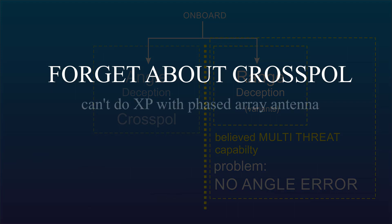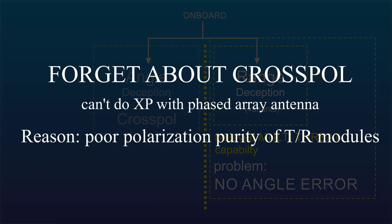And here's another problem. Cross-pole can't be done with a phased array antenna, because the polarization purity requirement of the radiating antenna elements is too extreme. Trying to do cross-pole with a phased array antenna is just going to get you killed. You'll attract the missile.